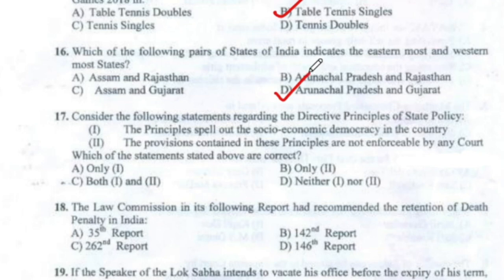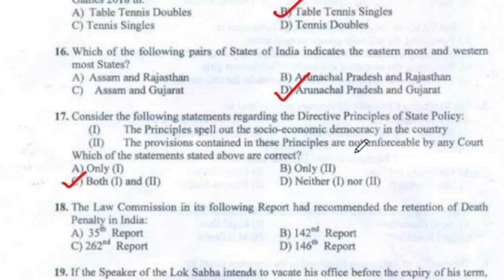Question 17: The correct answer is Option C — the Directive Principles of State Policy spell out socio-economic democracy in the country, and the provisions contained in these principles are not enforceable by any court. Both statements regarding the DPSP are correct.